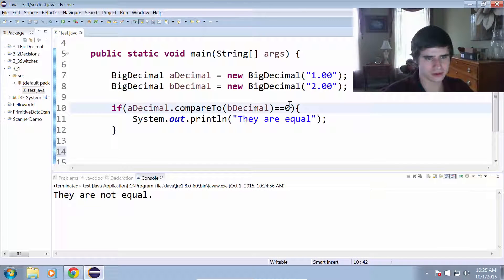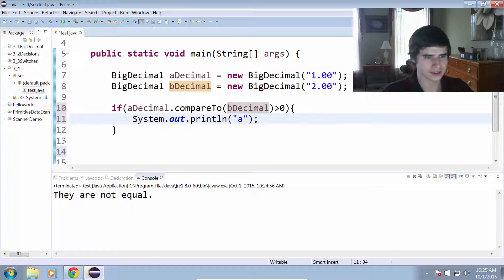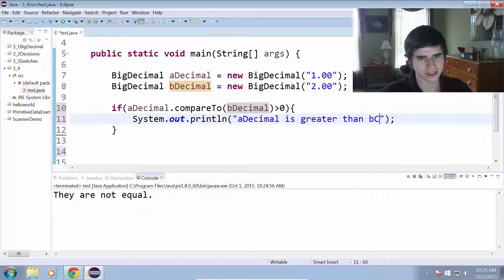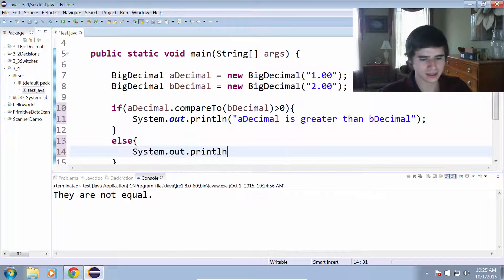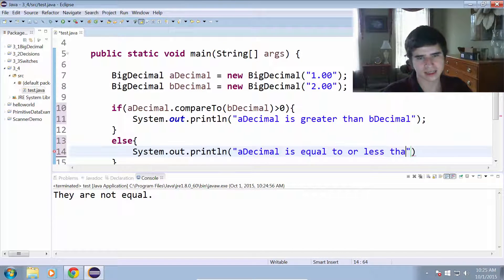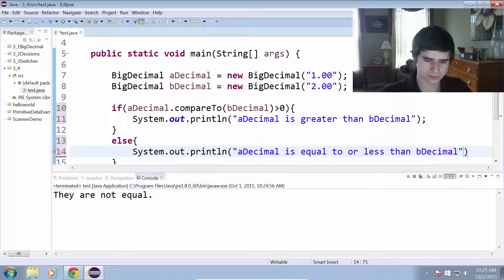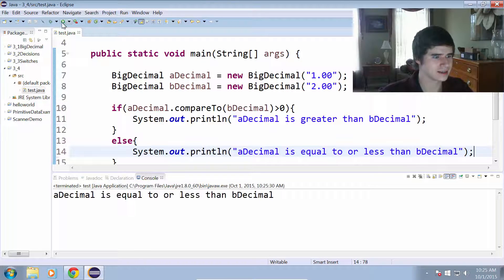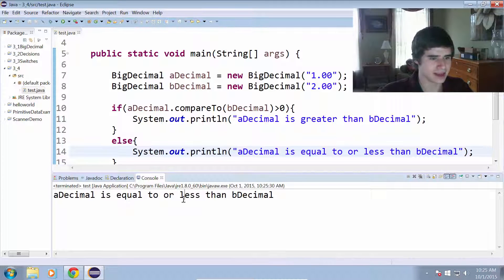we can do greater than zero, and that'll mean that aDecimal is greater than bDecimal. So we'll say aDecimal is greater than bDecimal. Else system out print line, aDecimal is equal to or less than bDecimal. We'll run that, and now it'll say aDecimal is equal to or less than bDecimal, because of course one is less than two.